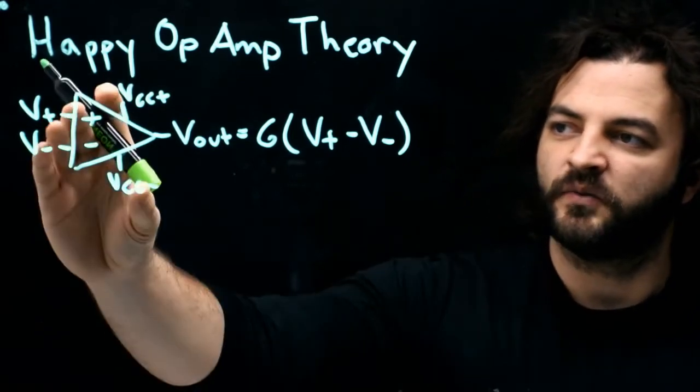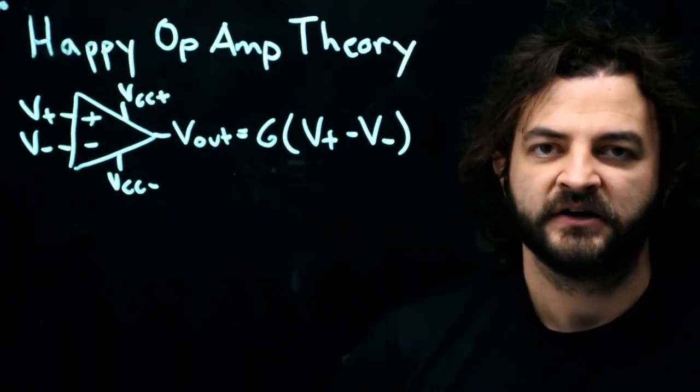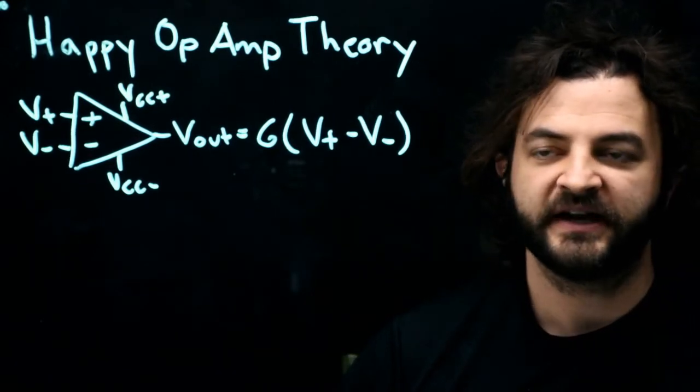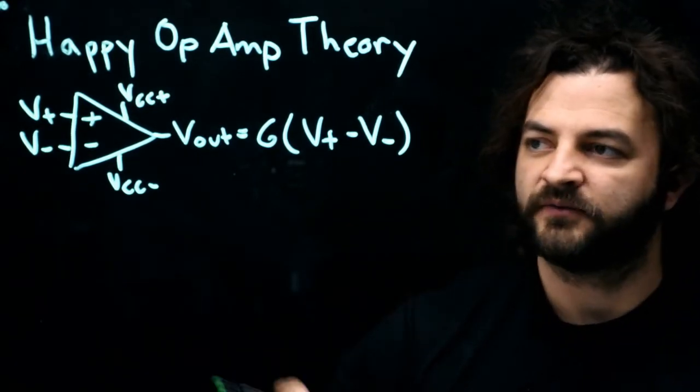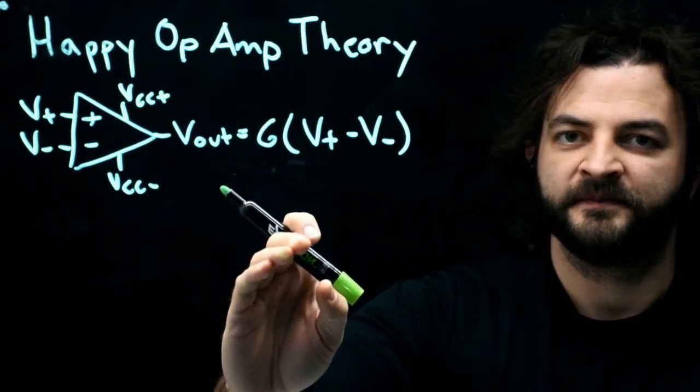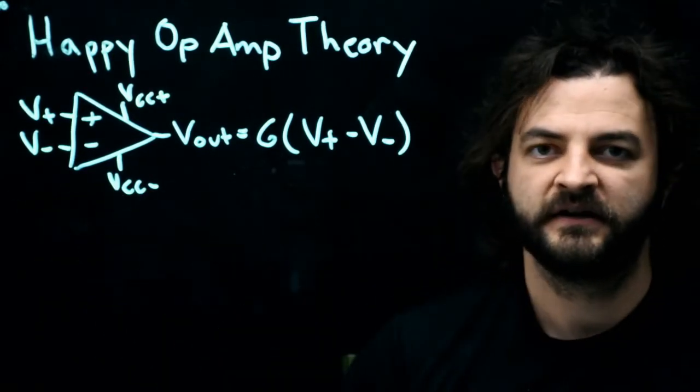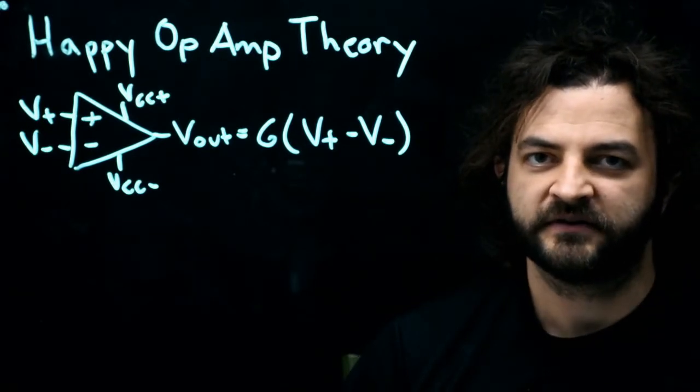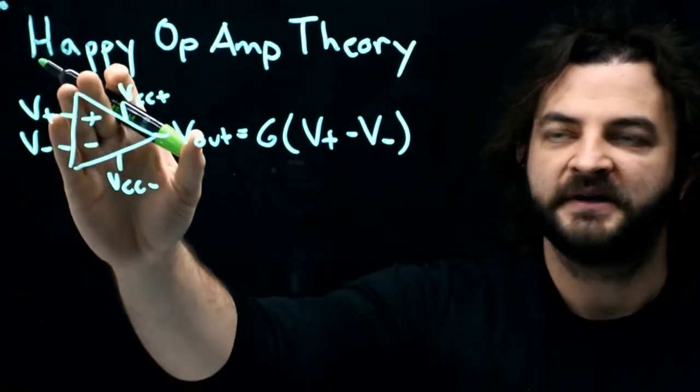If we wire our circuit in a different way, we'll actually be able to do something much more interesting. We'll build an amplifier so that we'll have one input and one output, and we can have the output be some scalar version of the input. That'll take advantage of some simple rules that we call happy op-amp theory.